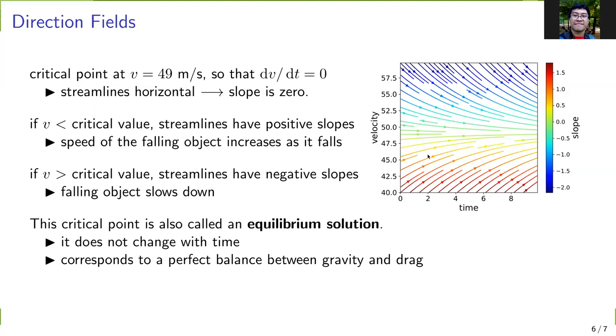This critical point, the horizontal line, is called an equilibrium solution. If the velocity reaches that point, it will not change with time, and this corresponds to a situation where there's a balance between gravity and drag.